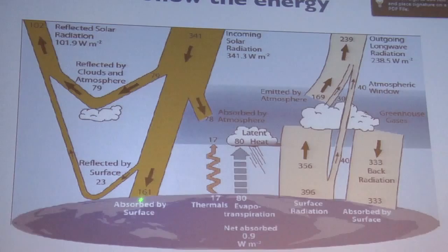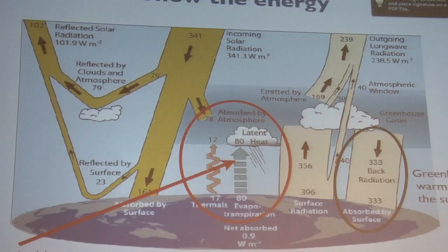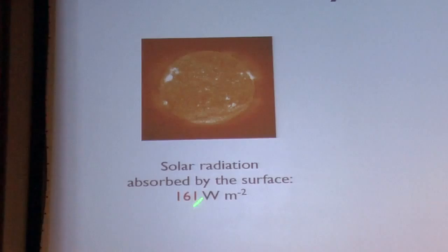But, very important point, the atmosphere is emitting down as well as up. You know, the emissions are in all directions. Some of the photons go back down. 333 watts per square meter down. Compare that to this number. It's twice as big. There's twice as much energy coming down from the atmosphere as there is absorbed from the sun.